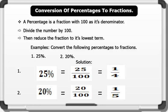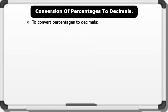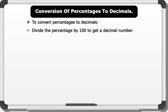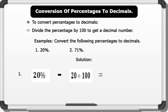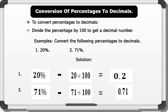Now let's see how we can convert percentages to decimals. To convert percentages to decimals, we first divide the percentage by 100 to get the decimal number. Examples: 1) 20% — dividing by 100 gives 0.2; 2) 71% — dividing by 100 gives 0.71. That's brilliant.